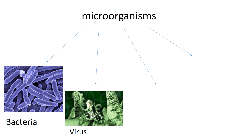Viruses are the smallest of the microbes — you could fit 500 million of them onto a pinhead. They are so simple we're not even sure if they're alive or not; biologists aren't even sure if they want to classify them as living things. They are made up of a core of genetic material — either DNA or RNA, depending on the type of virus — and that's surrounded by a protein coat.